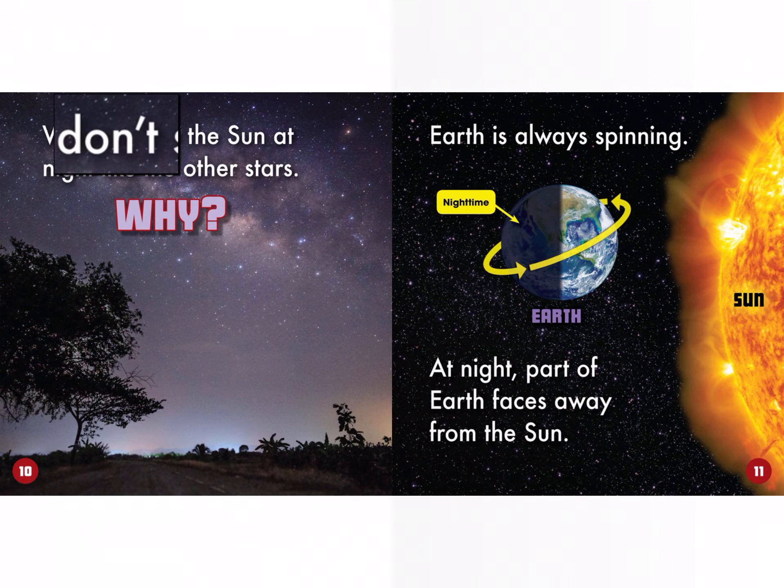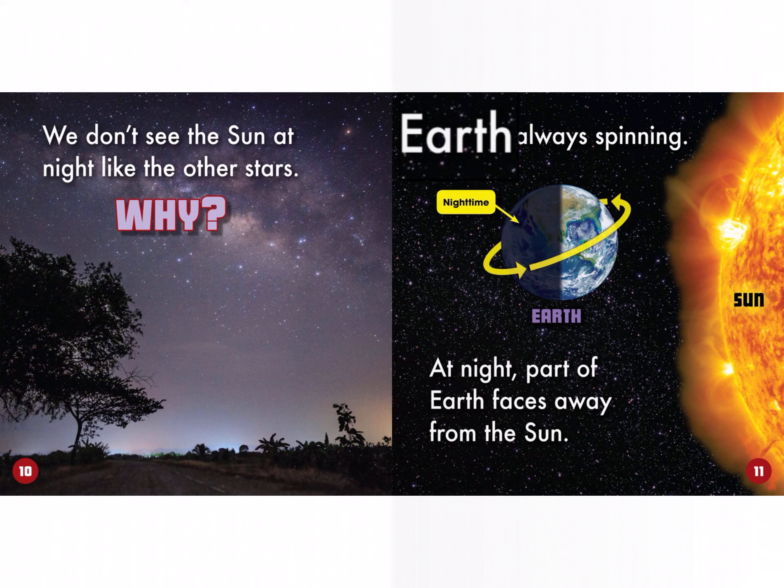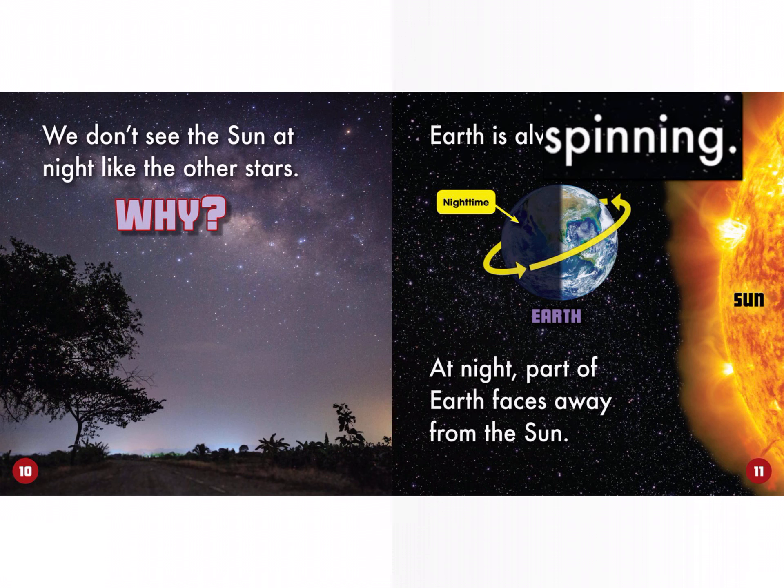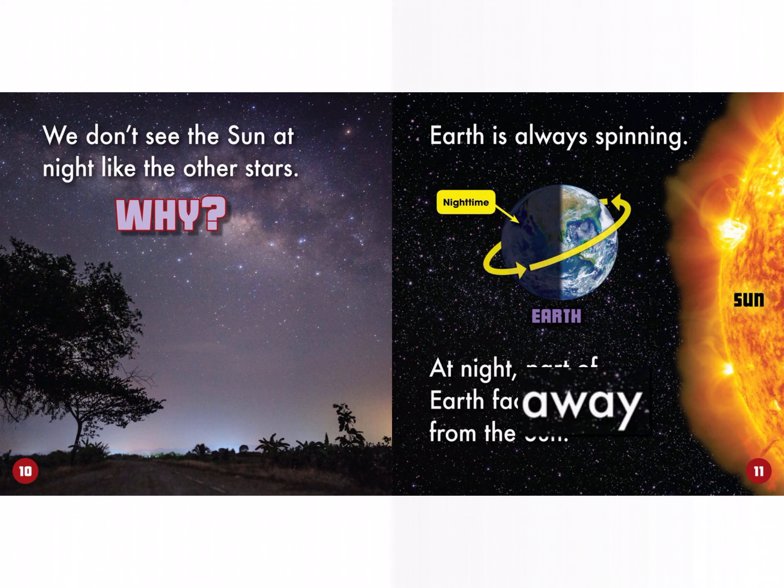We don't see the Sun at night like the other stars. Why? Earth is always spinning. At night, part of Earth faces away from the Sun.